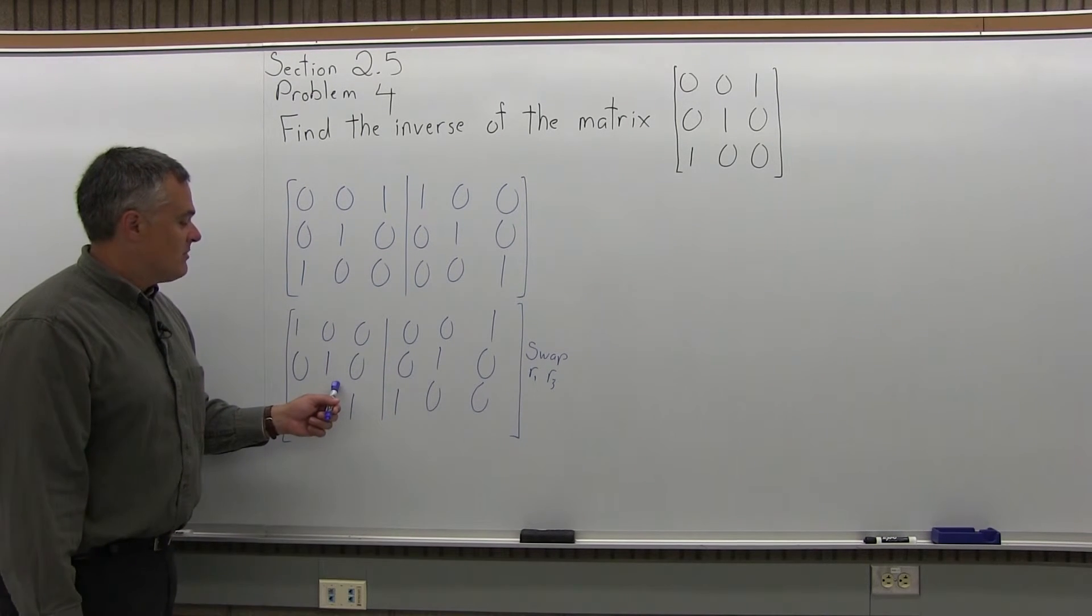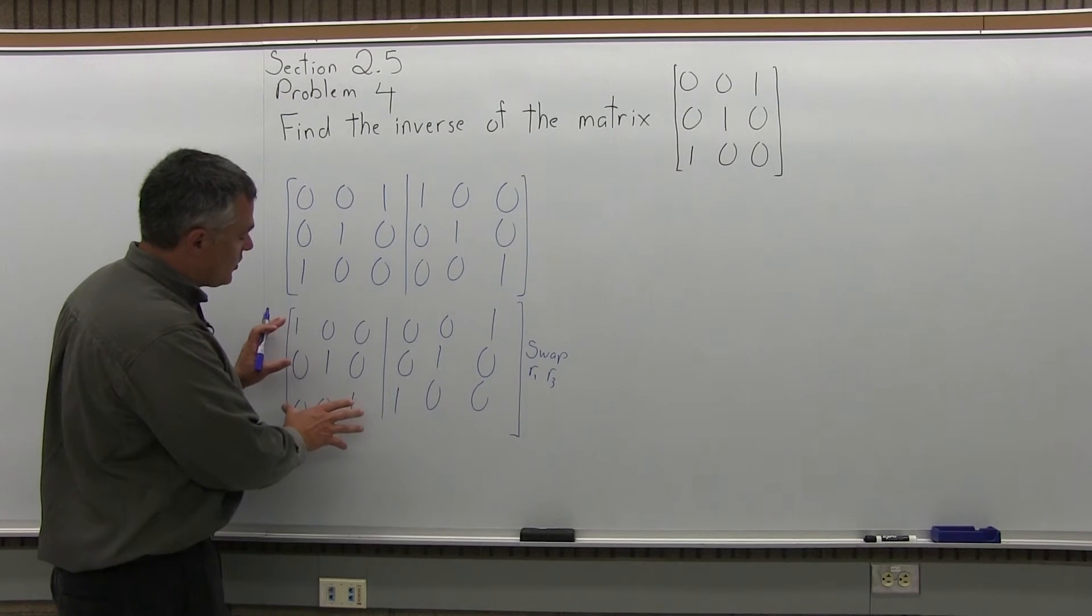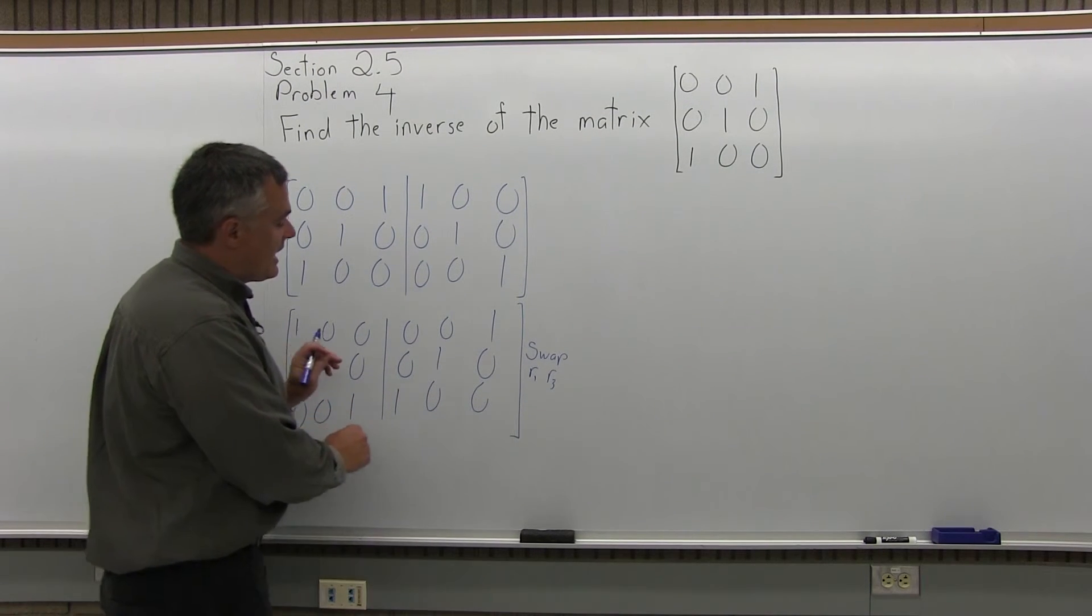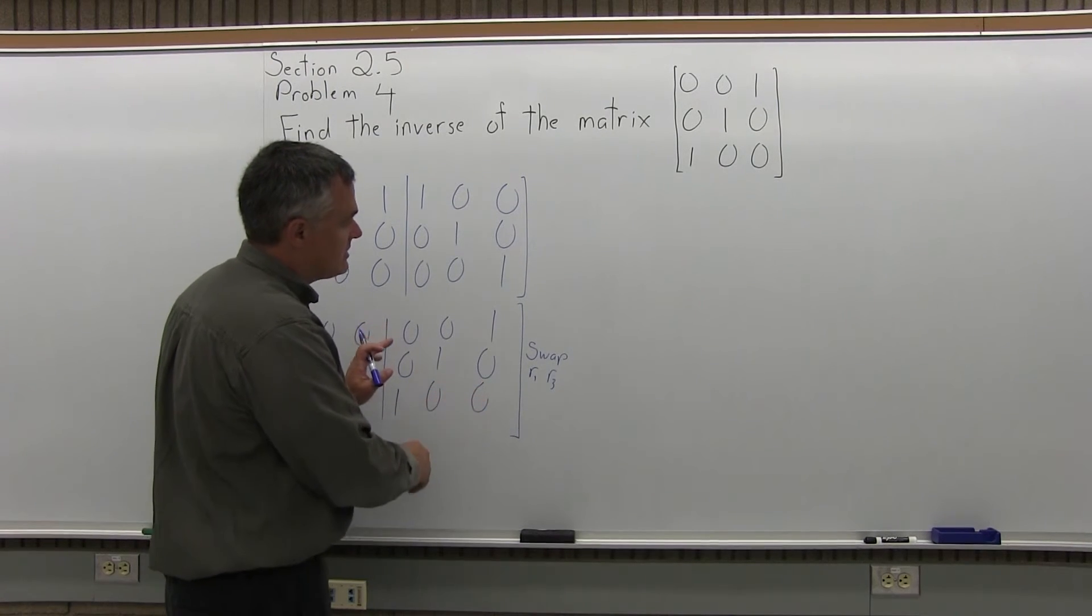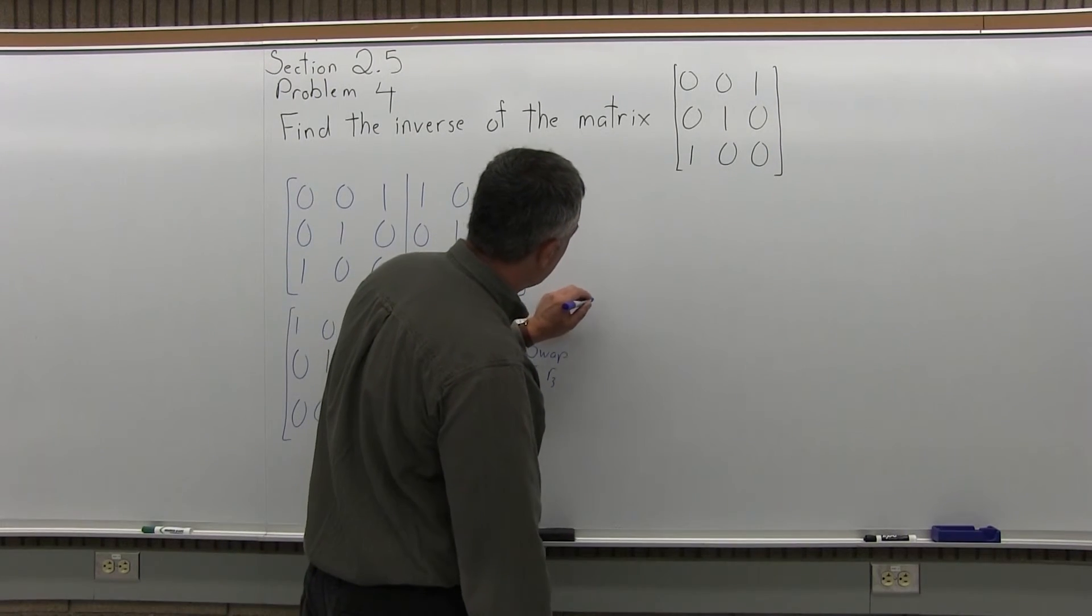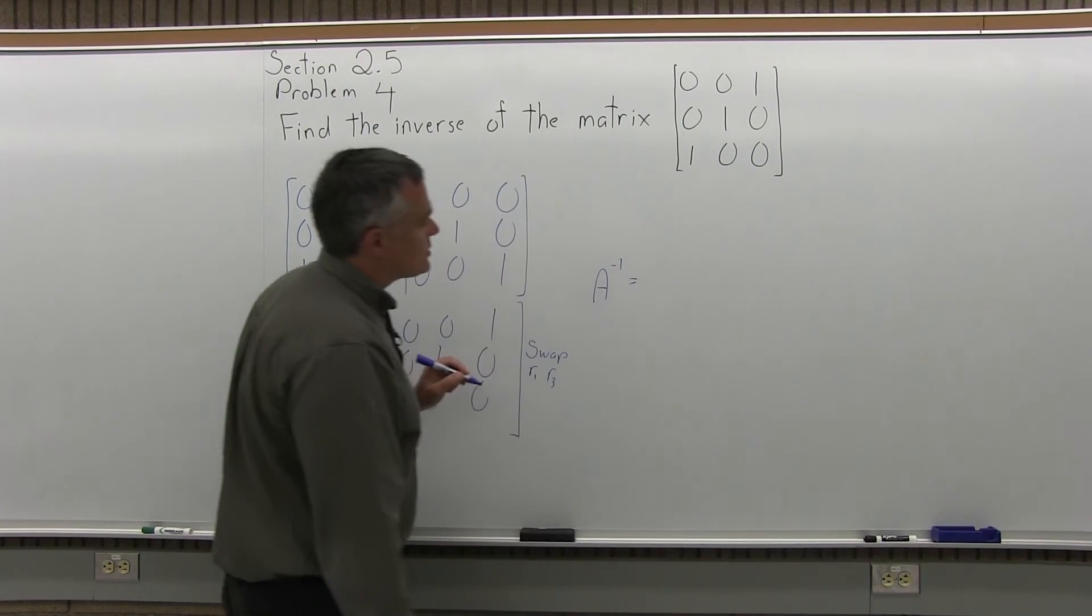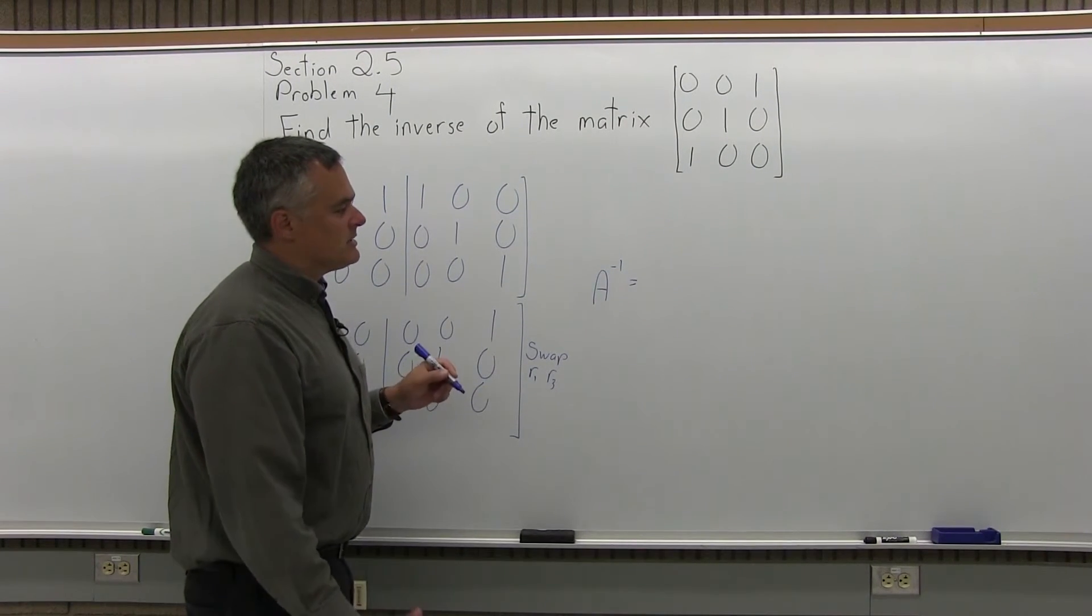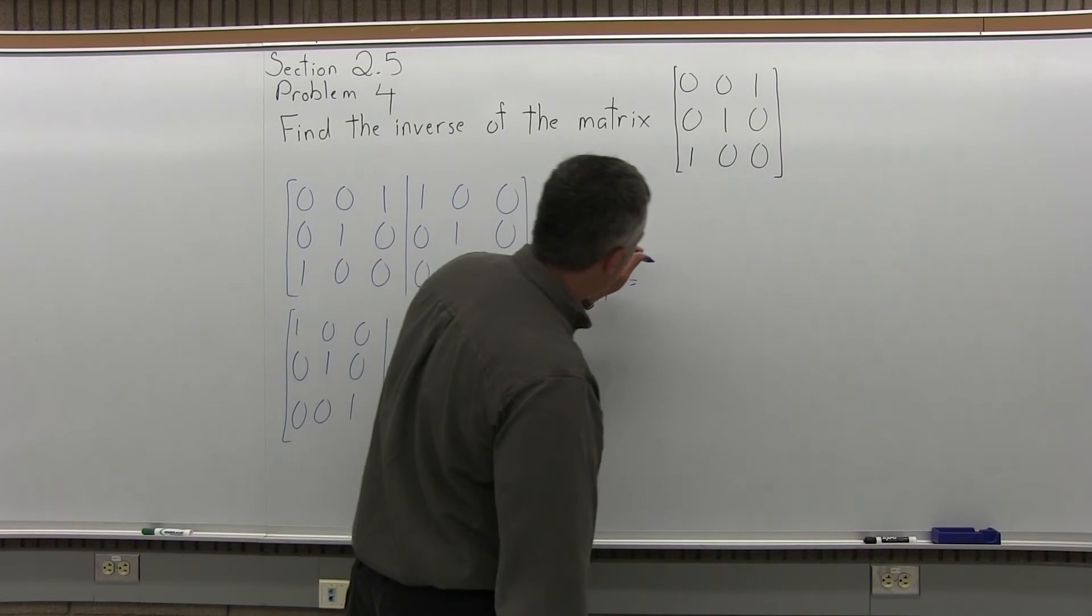And by doing that, the matrix on the left has become an identity matrix. It's got all the 1s and 0s in the right spot. And now the matrix on the right half of our double matrix is the inverse. So off to the side, let me write A inverse. And again, the notation looks like A to the negative 1 power, but it's really read A inverse.